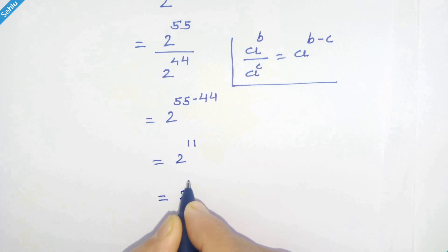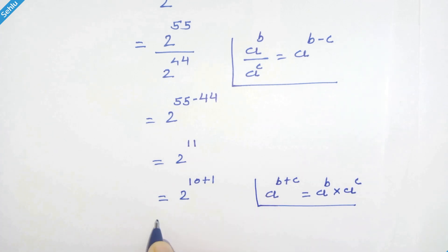so 2 raised to 10 plus 1. If we have a raised to b plus c, then it can be a raised to b times a raised to c. So here we can write 2 raised to 10 times 2.